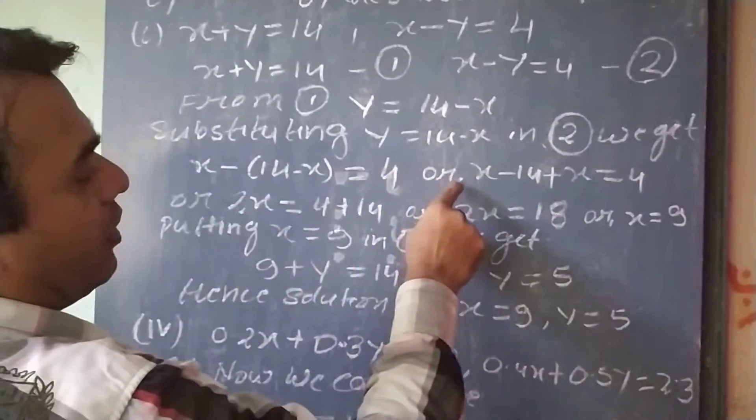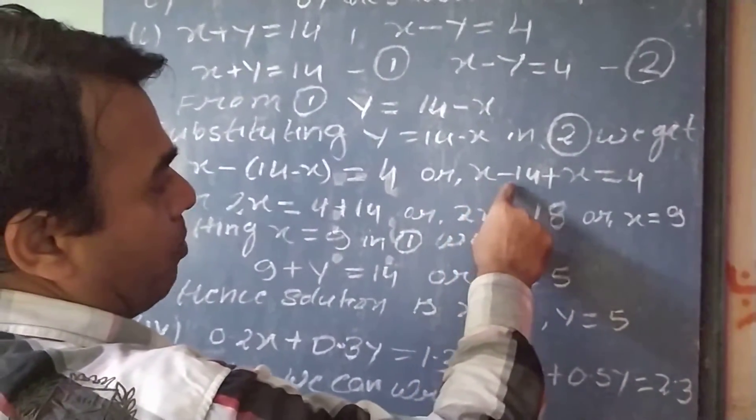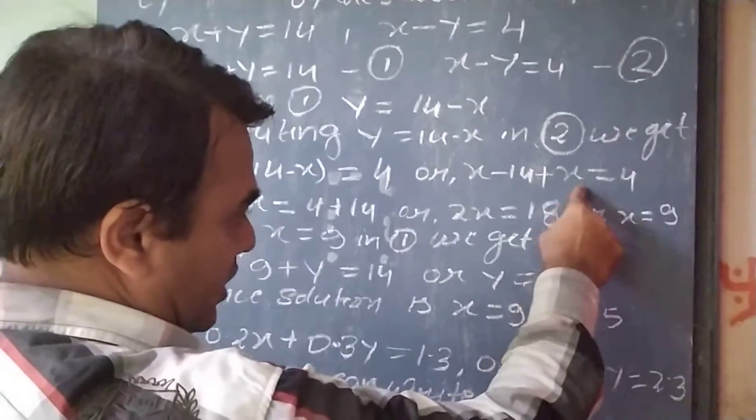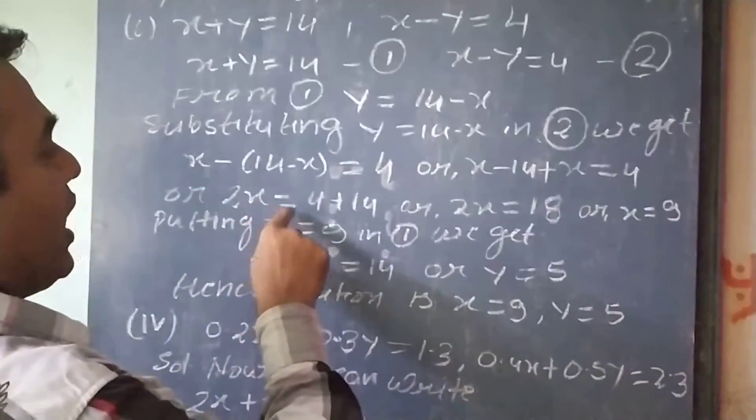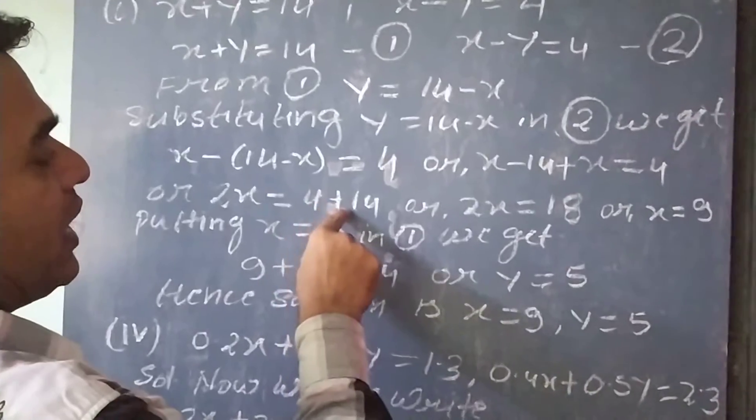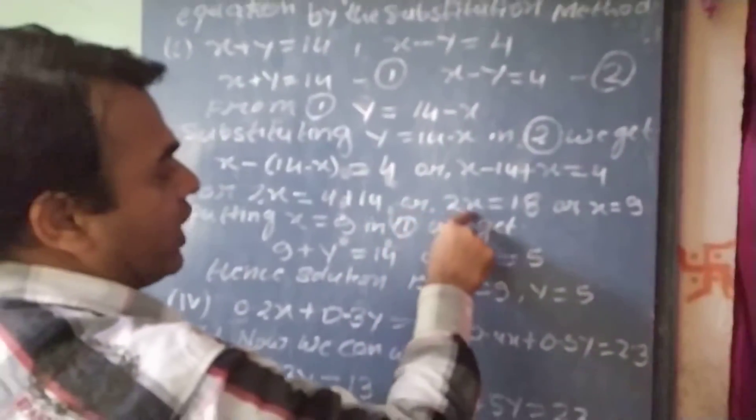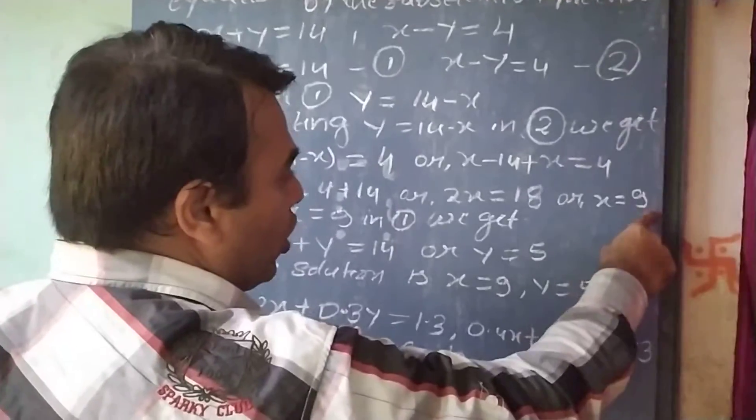So, what we get: x minus 14 plus x equal to 4, or 2x equal to 4 plus 14, or 2x equal to 18, or x equal to 9.